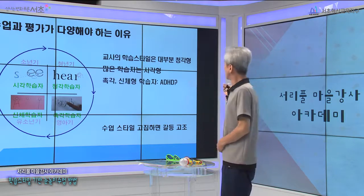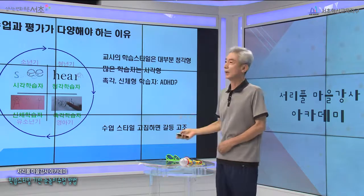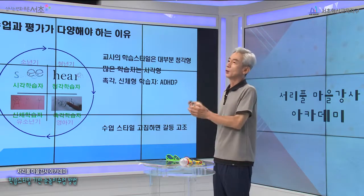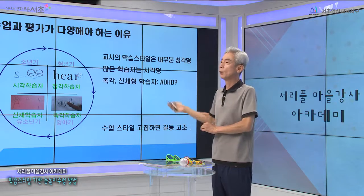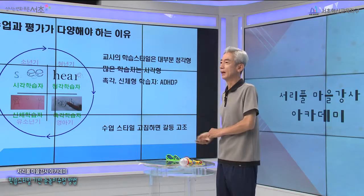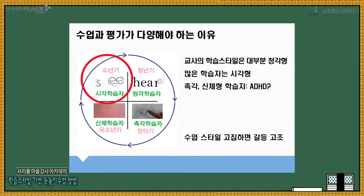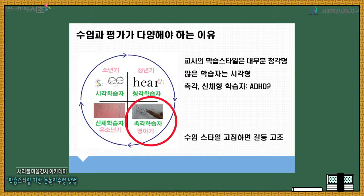우선 이 도표 하나로 교직 35년의 노하우를 정리해 봤습니다. 맨 위에 청각학습자가 있고, 그 다음에 2·4분면에 시각학습자, 신체학습자, 촉각학습자가 있습니다.